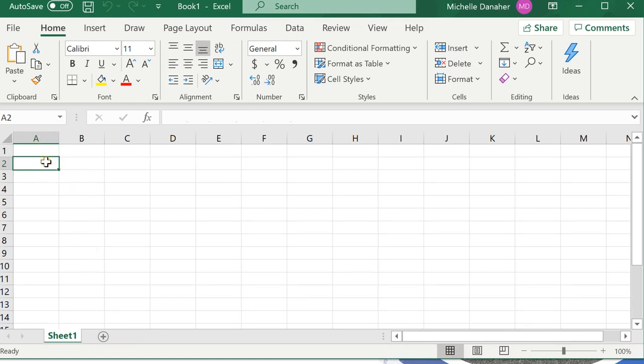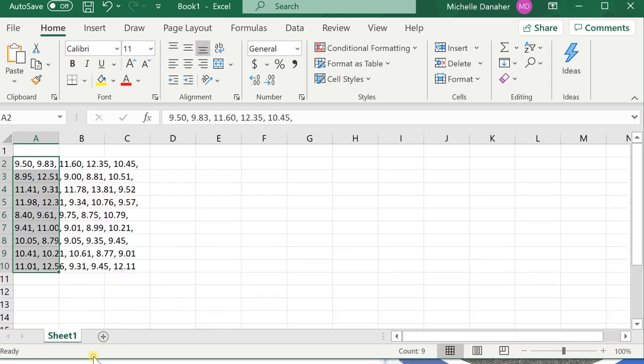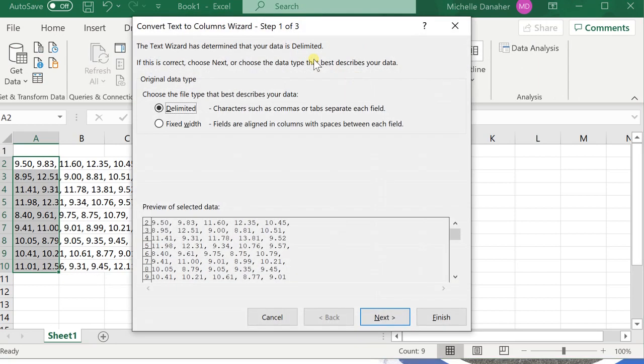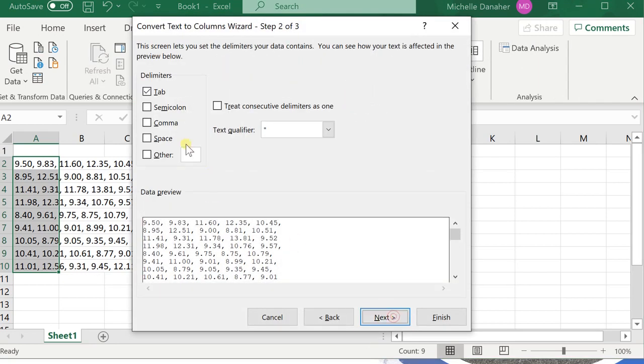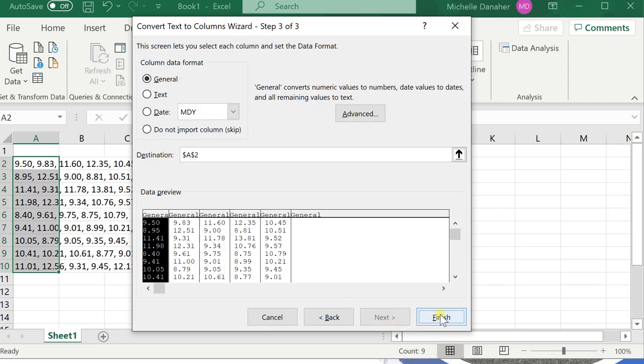So Ctrl-V. It comes out looking a little strange, so we'll choose the second paste option which makes it match the destination formatting. Also, each data is not in its own cell. So I'll go to Data, up top, Text to Columns, Delimited, Next, and have it separate by comma, not by tab. So now every time there's a comma, they're going to put the data in a new cell, and then press Finish.